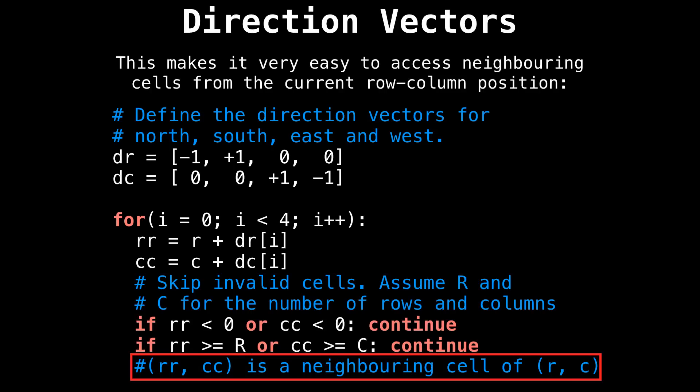So if those two checks pass, then we know that the new position rr, cc is a neighboring cell of our current position where the red ball was r, c. So in summary, this technique is really nice, really easy to code, and actually naturally extends to higher dimensions.